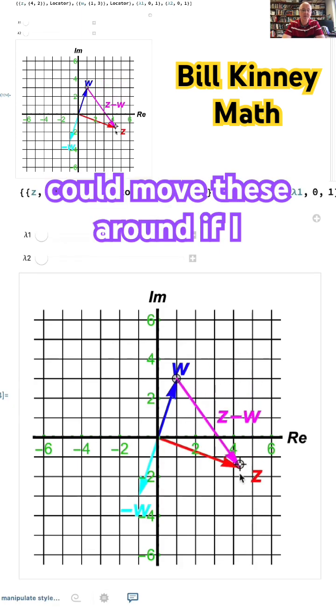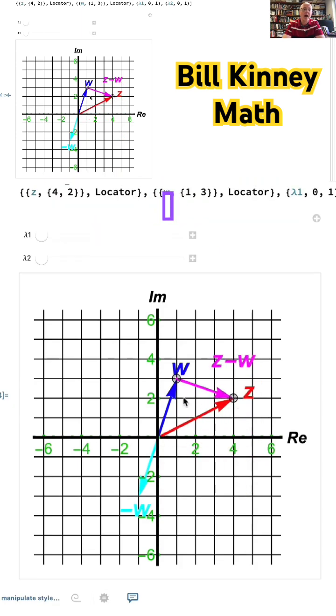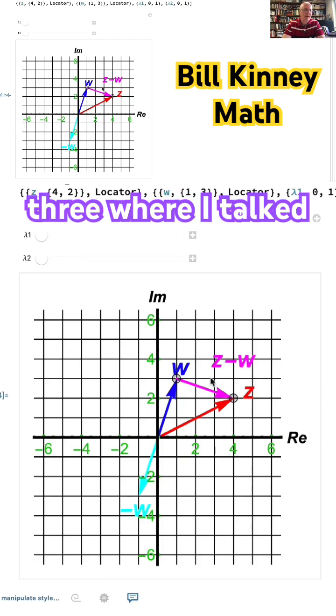I could move these around if I like. I also have negative w plotted in more of a light blue here. I've got z minus w up here, but as with video number three where I talked about the geometry of vector addition.